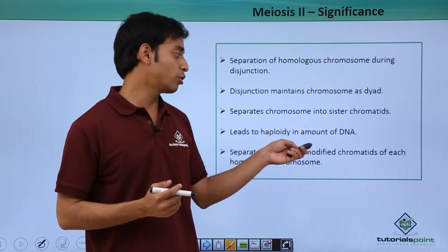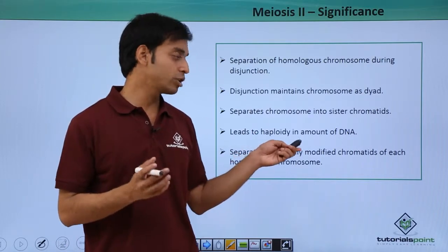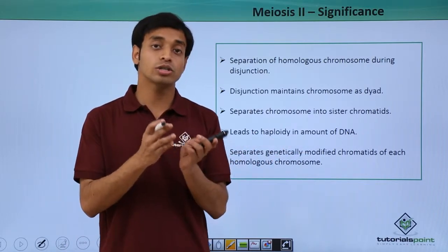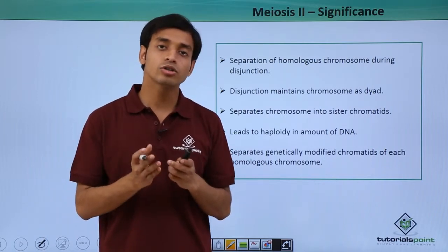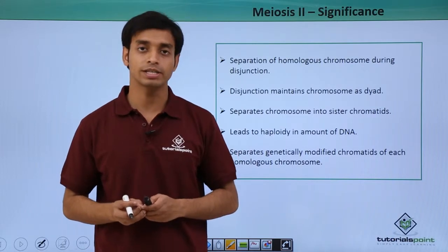This separates genetically modified chromatids of each homologous chromosome. The genetically modified chromatids result from the process of crossing over. These are separated into new daughter cells.